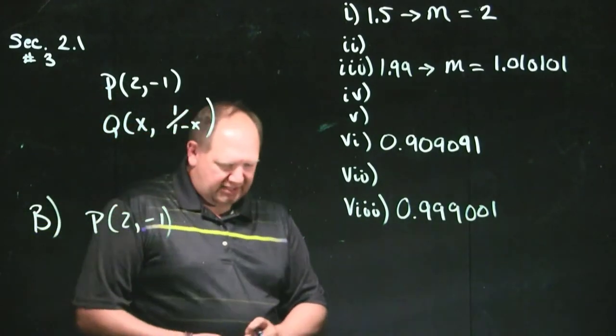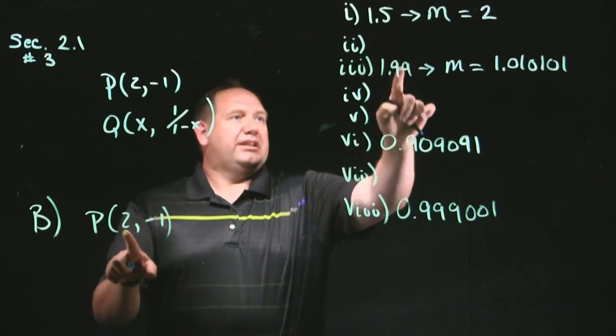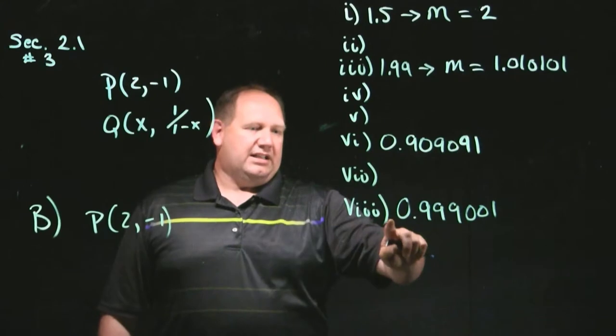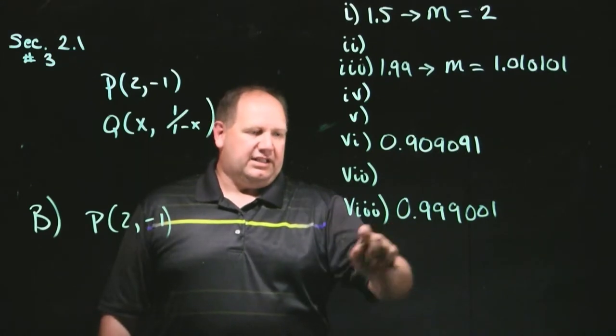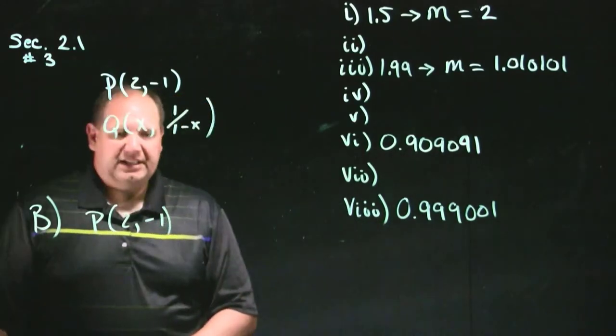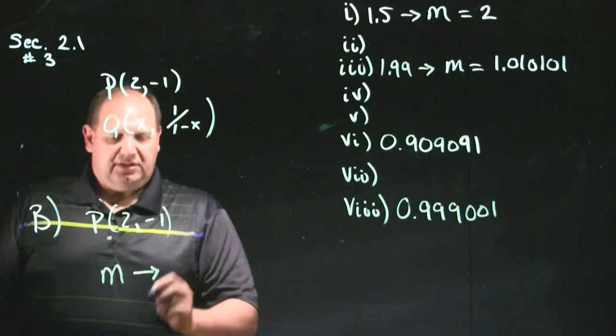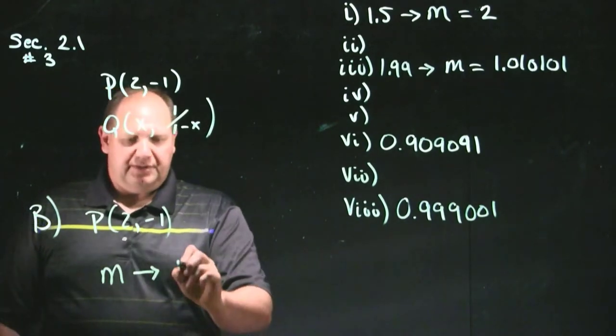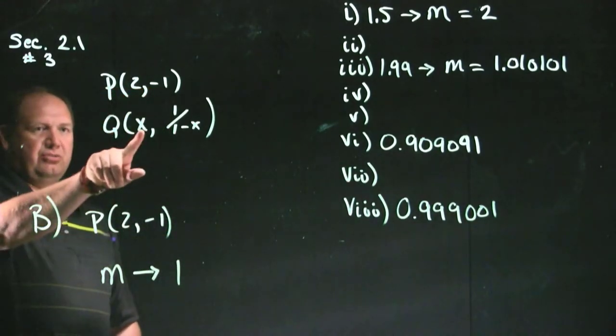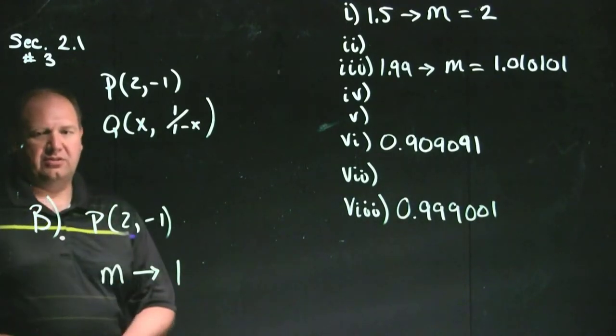And what I see is, as the value of the input, 2, gets closer to 2, and in vii, and in viii, that we worked out, we have these inputs that are getting closer and closer to 2. So, as the value of our input q is getting closer to 2, the value of our slope is getting closer and closer to 1.